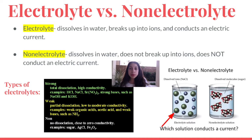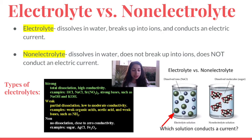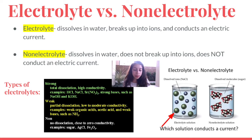Electrolytes dissolve in water, break up into ions, and conduct an electric current. Non-electrolytes also dissolve in water, but they do not break up into ions and do not conduct an electric current. As you can see in the diagram, the electrolyte solution contains dissolved ions of NaCl, while the non-electrolyte solution contains dissolved molecules of sugar. The sugar molecules have not broken down into ions like the NaCl ions.